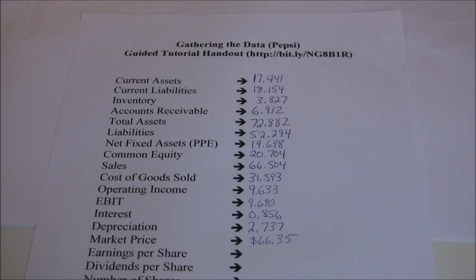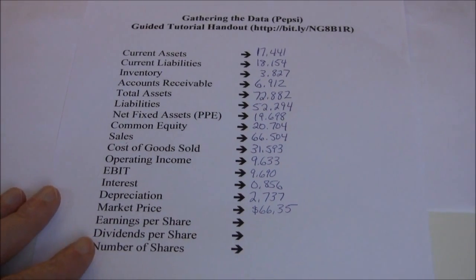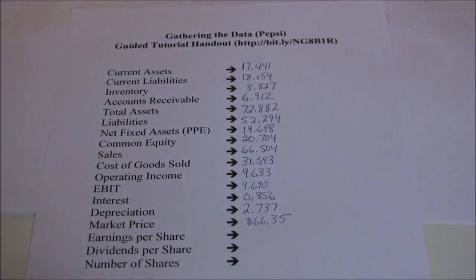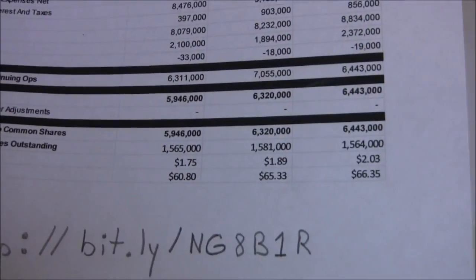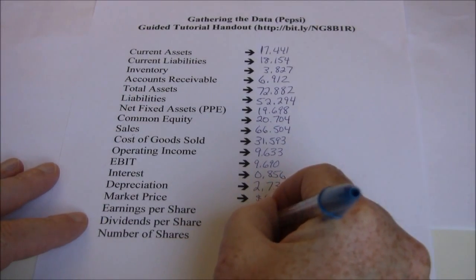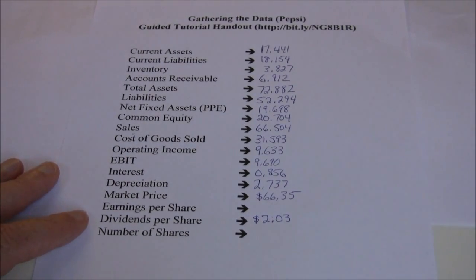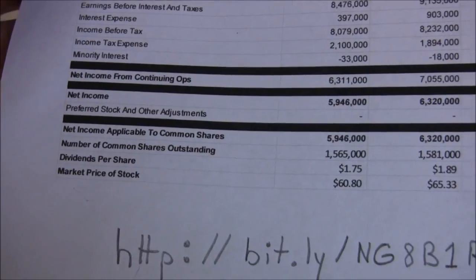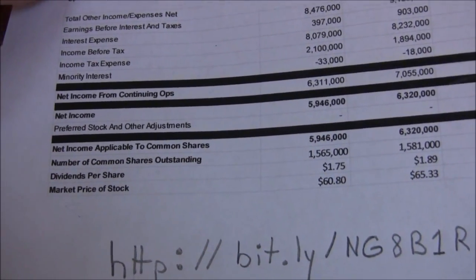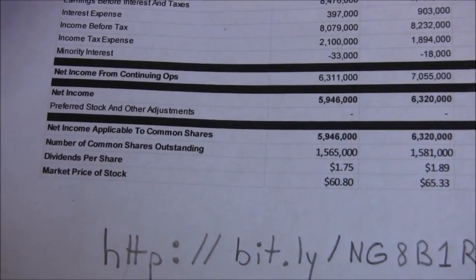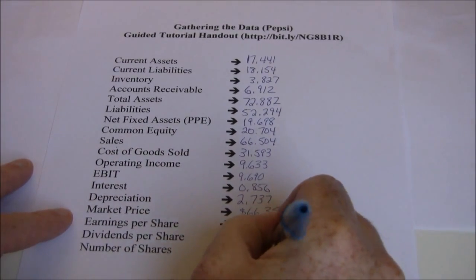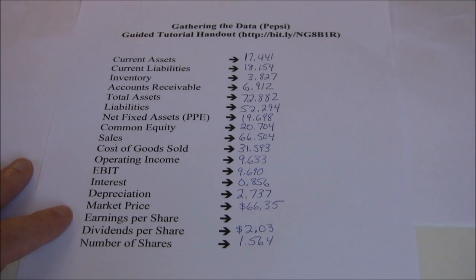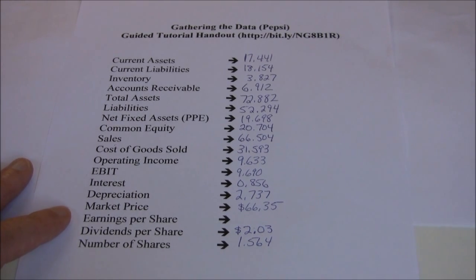Earnings per share — we're actually going to calculate that, so it shouldn't need to be looked up here. Dividends per share is provided on the income statement — for this handout $2.03 was the dividends per share Pepsi paid out in 2011. Lastly we need the number of shares outstanding, found at the bottom of the income statement or balance sheet — that's $1.564 billion shares. That gives us all our data, which we'll use for ratio calculations in the following videos.